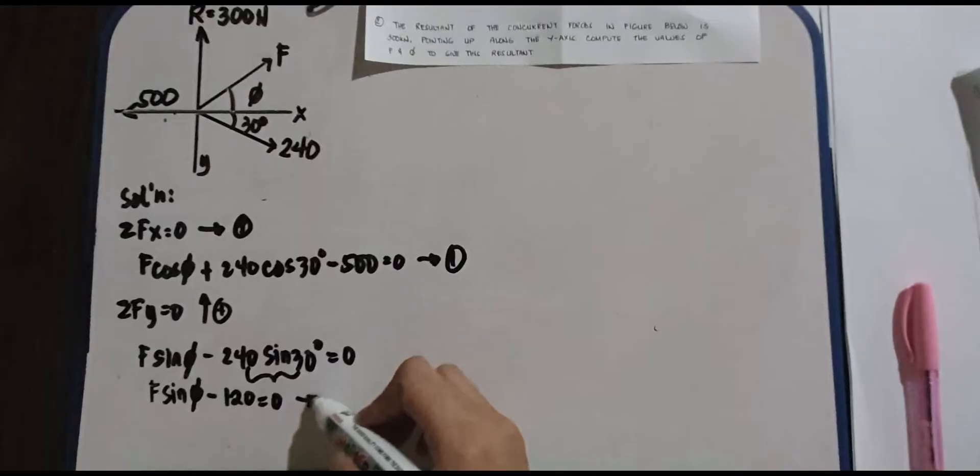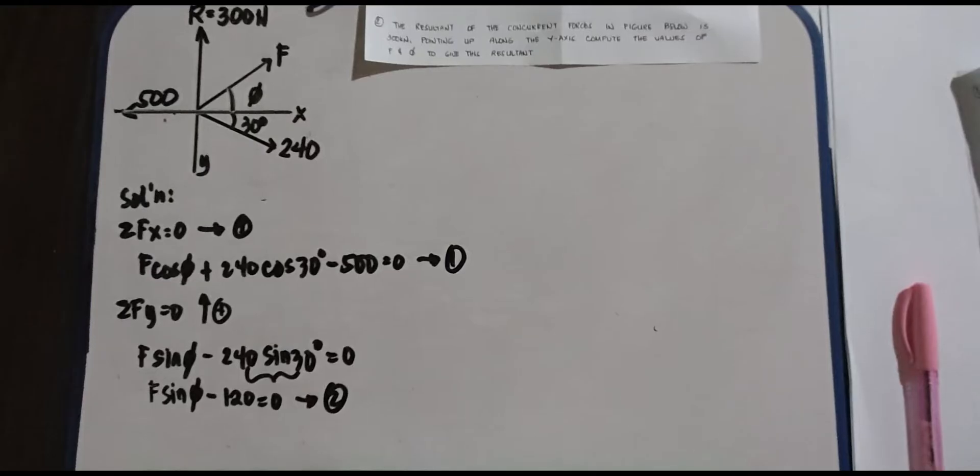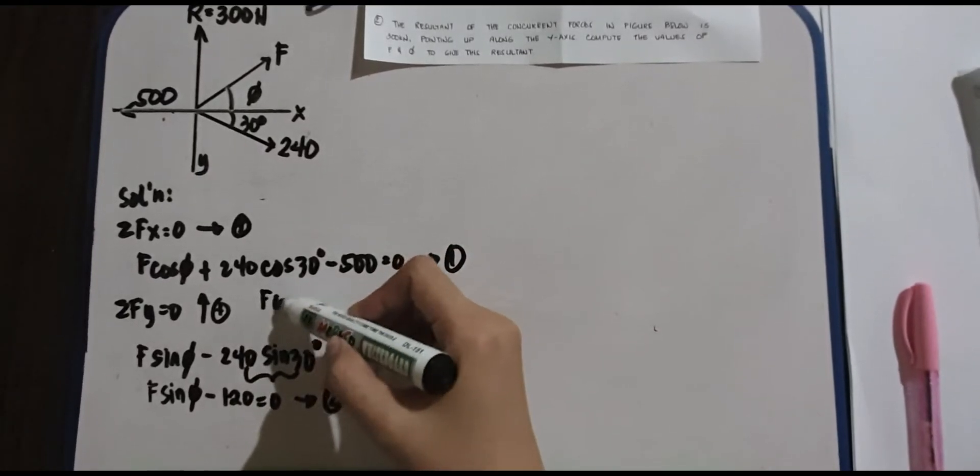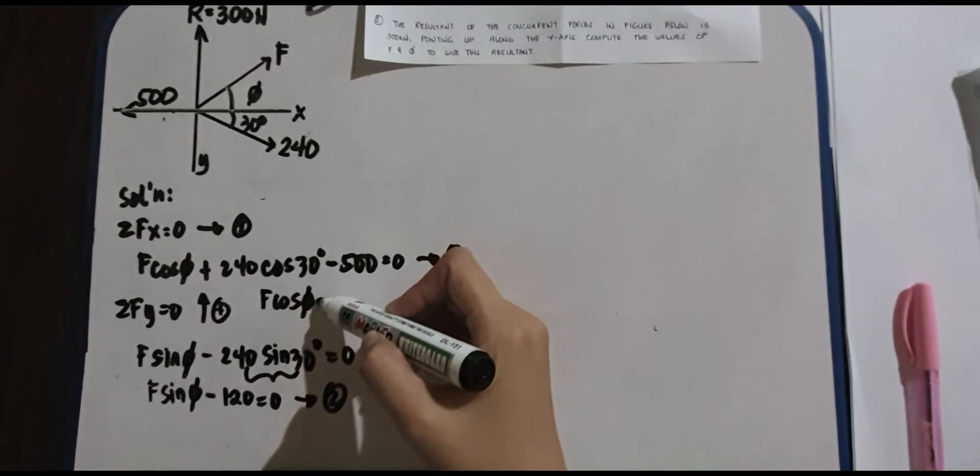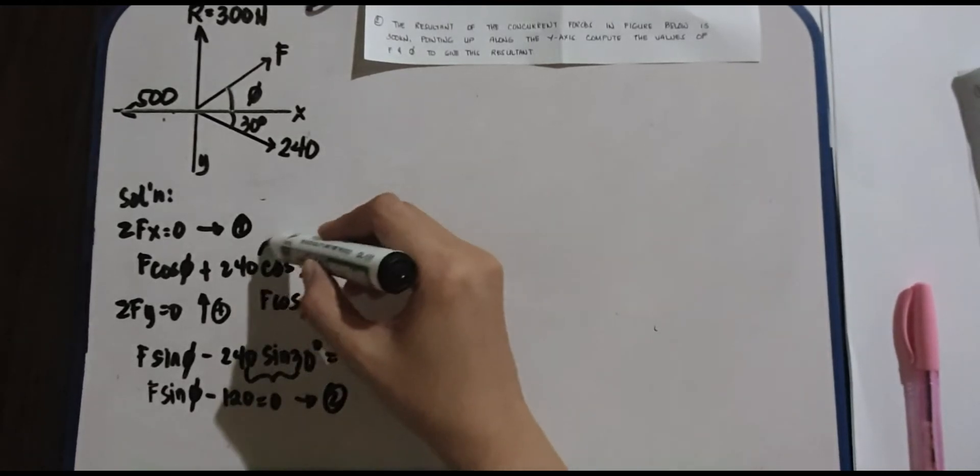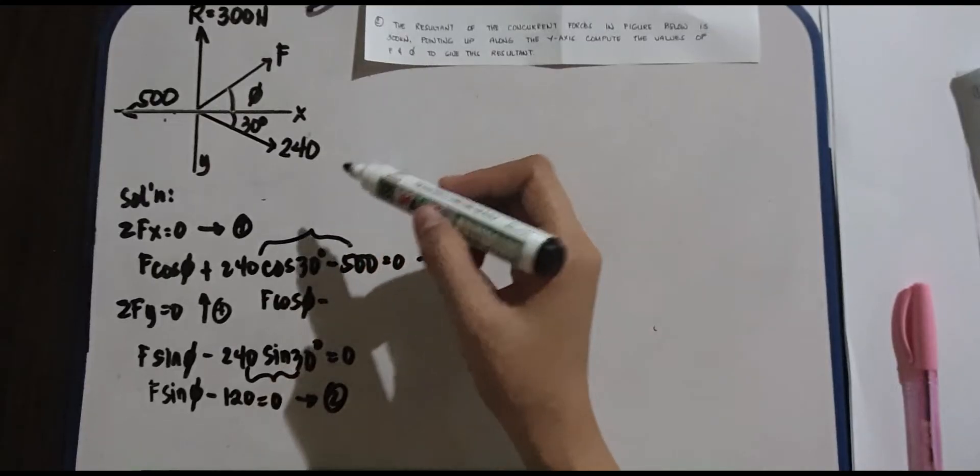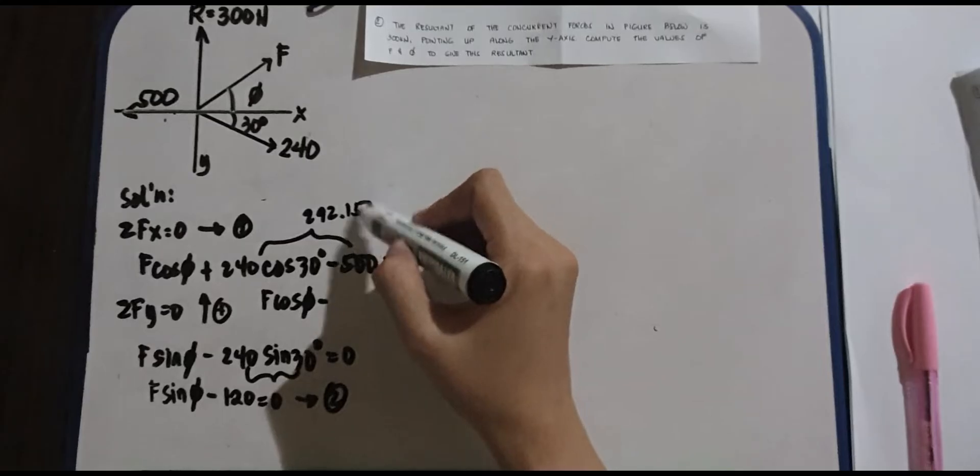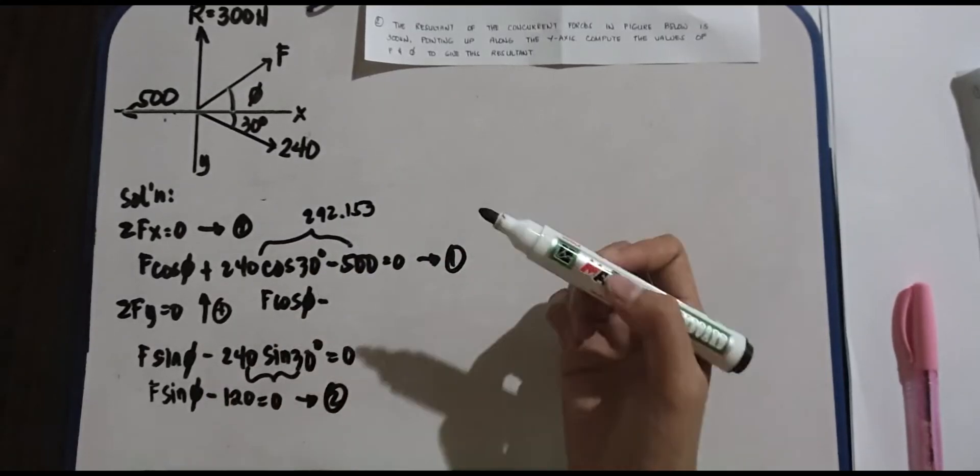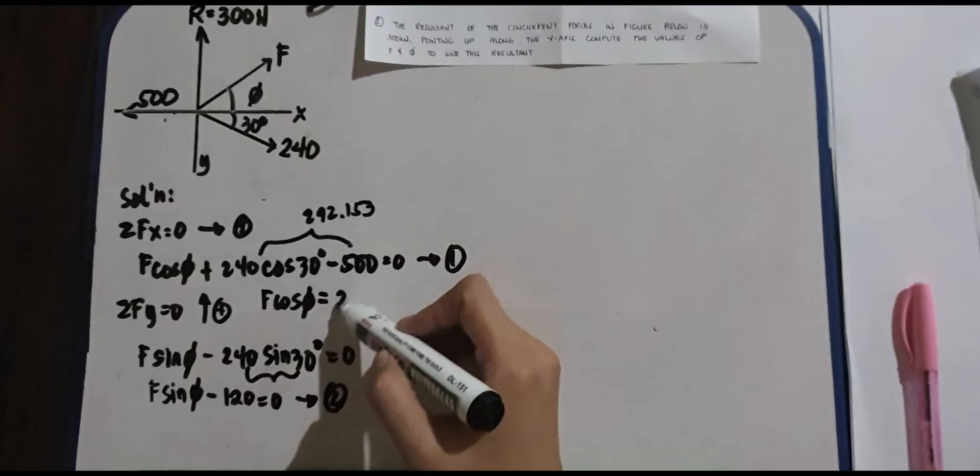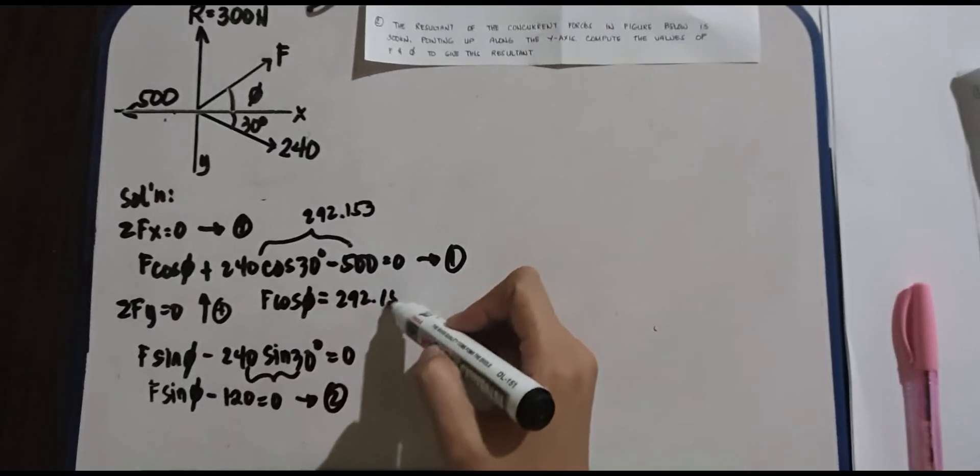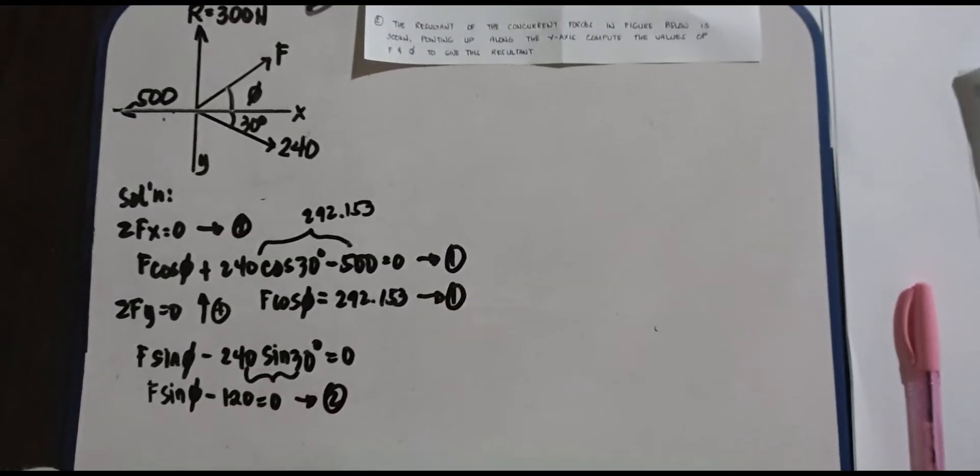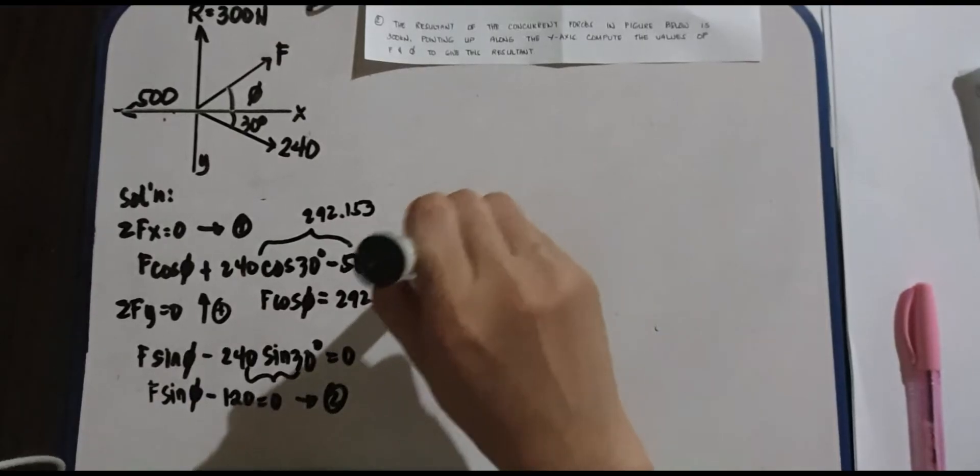And this is your equation 2. But let's fix this F cosine of yours. So F cosine of phi equals, what's the value of this? Please complete it. That is equivalent to 292.153. So let's move it to the other side, that will become positive 292.153.